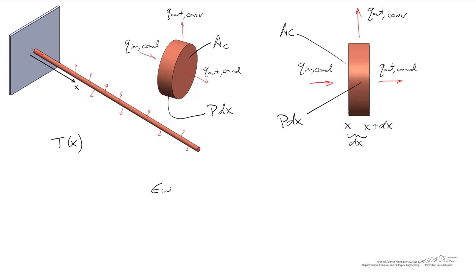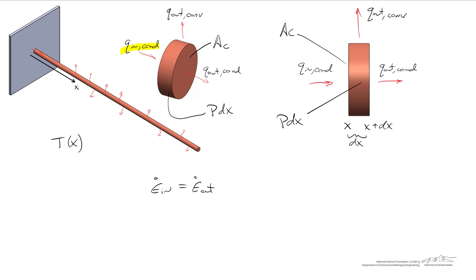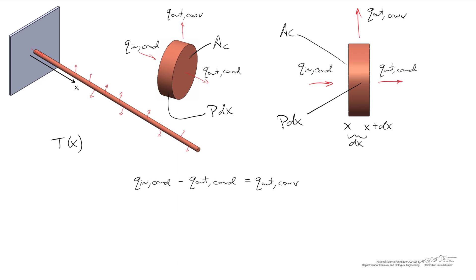As is usually the case, we're going to start with an energy balance. The control volume is the differential element itself. We look at energy entering minus the rate at which energy is leaving, plus the rate at which energy is being generated, equal to the rate at which energy is stored. We'll assume steady state and no thermal energy generation, so energy entering equals energy leaving. Energy enters only due to conduction, and leaves in two ways: convection and axial conduction. So we have q_in conduction equal to q_out conduction plus q_out convection.